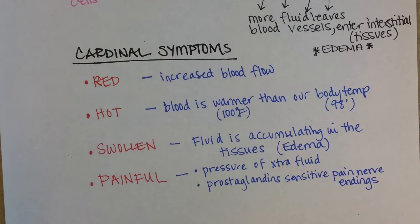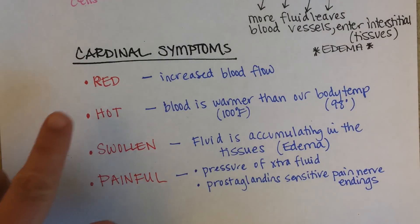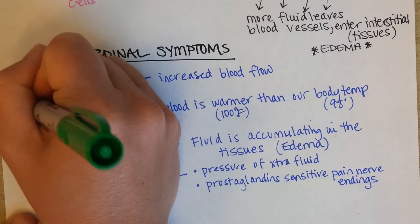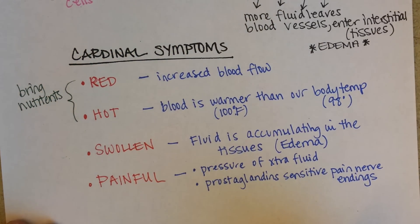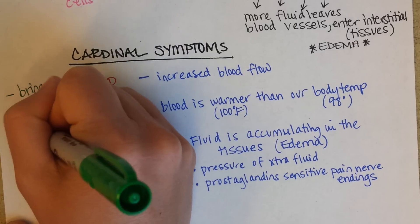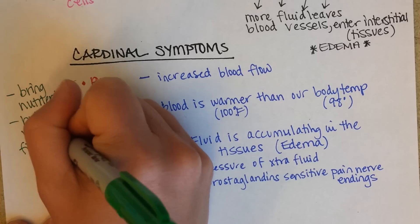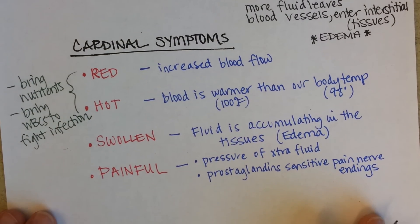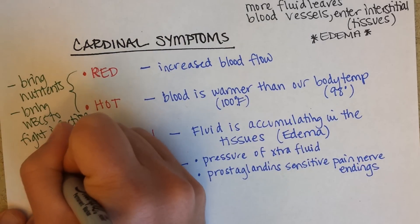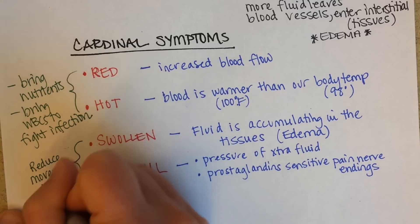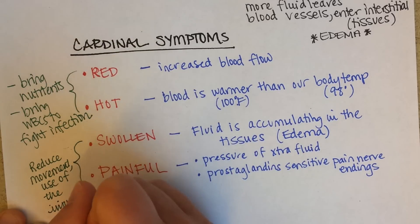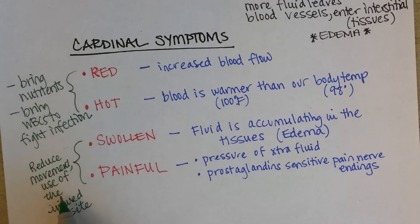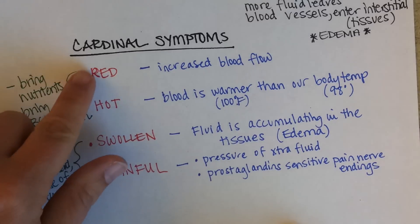So let's come back to why is this good — is there anything good about this? If you have increased blood flow, then you're going to be bringing nutrients — bringing the cavalry — to help with healing. Also bringing more white blood cells. And if you look at swollen and painful, both of those seem to have potentially good effects in that both are going to reduce movement or use of the injured site so that it can heal. So bringing nutrients to help with healing, bringing white blood cells to help fight infection, and reducing movement of the injured site while it heals — those are the reasons that inflammation can be good.